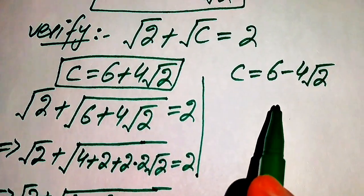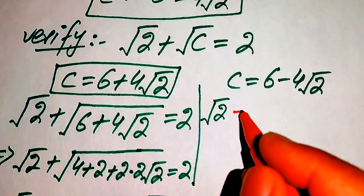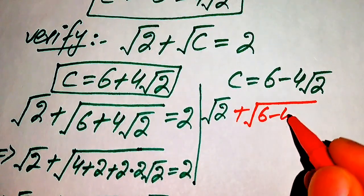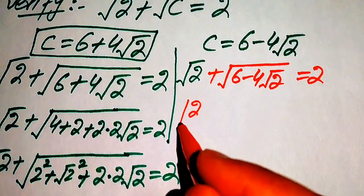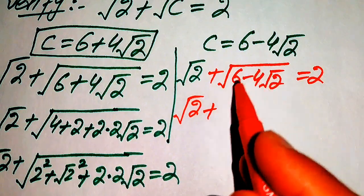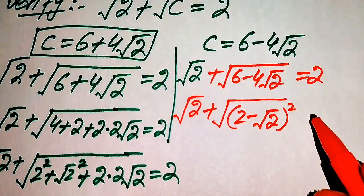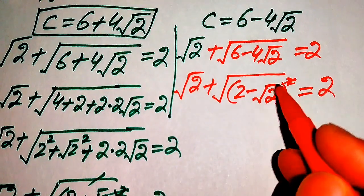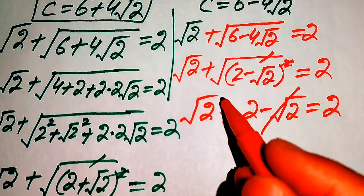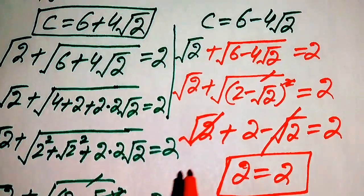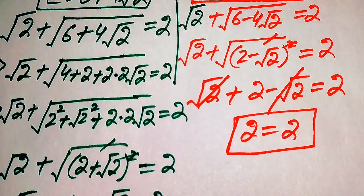Now we verify the second value C equals 6 minus 4√2. Substituting: √2 plus √(6 minus 4√2) equals 2. Completing the square inside the square root gives (2 minus √2)², so √(2 minus √2)² equals 2 minus √2. The equation becomes √2 plus 2 minus √2 equals 2, where positive and negative √2 cancel, giving 2 equals 2. Therefore C equals 6 minus 4√2 is the only valid solution. Thank you for watching; please subscribe for more videos.